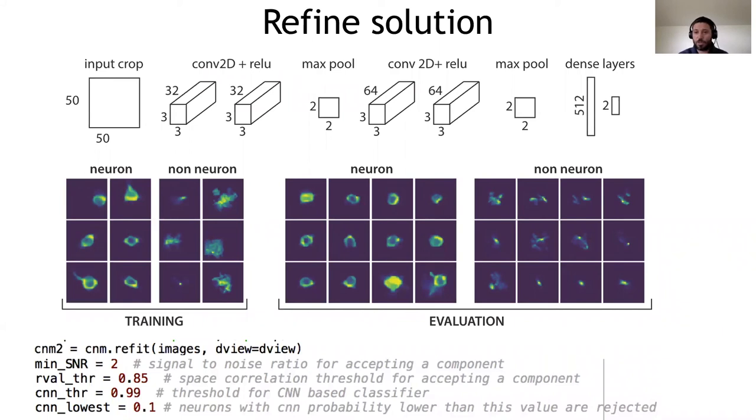There is a question about merge threshold. The merge threshold is checking the temporal correlation between traces that overlap in space. So if they have at least one pixel in common, we check what is the correlation. And if the correlation is very high, then we merge them.